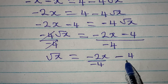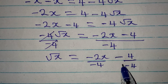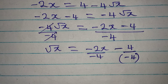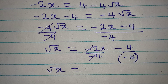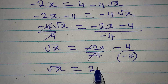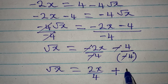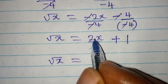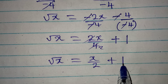Simplifying the division, the negatives cancel. So 2x over 4 simplifies to x over 2, and negative 4 over negative 4 gives positive 1, meaning root x equals x over 2 plus 1.